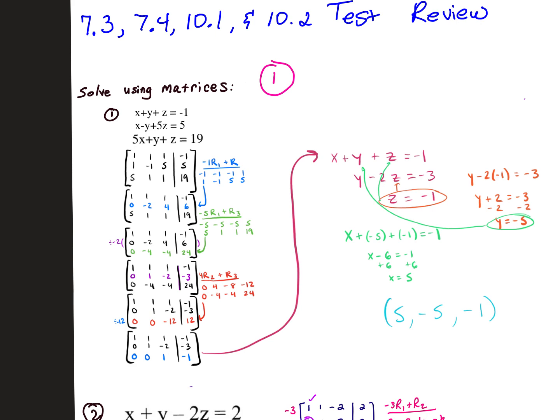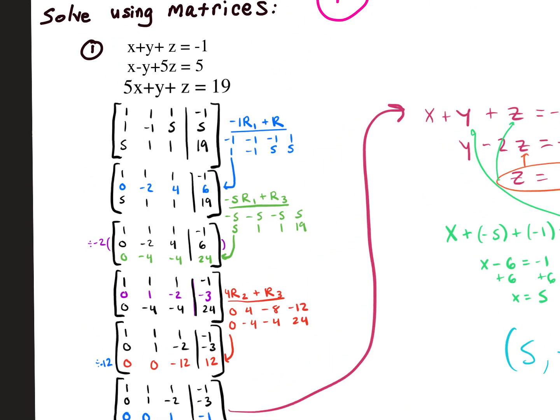One thing I do want to show you is if you get to a step like this, you see how this blue row right here, everything's divisible by two. If you want to go ahead to make your numbers smaller, if you can divide everything in the row by the same number, that's fine. It's just taking out the GCF. Like you can do that here as well, everything by negative four. Whatever. If you want to, you can. If you don't want to, you don't have to.